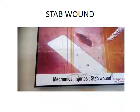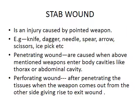The next photograph is of a stab wound. What is the definition? It is an injury caused by a pointed weapon. Which pointed weapons can give rise to a stab wound? Examples are knife, dagger, needle, spear, arrow, ice pick, or scissors.